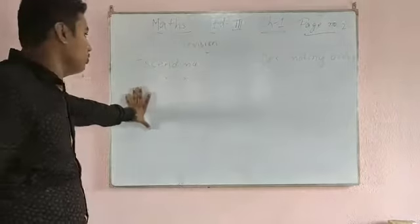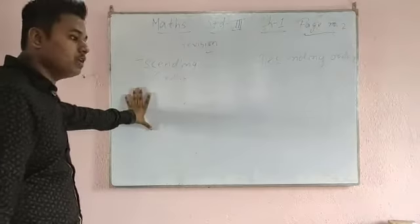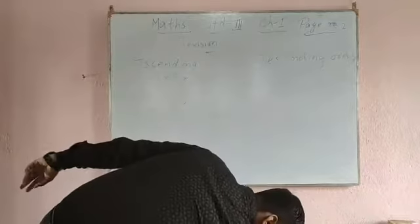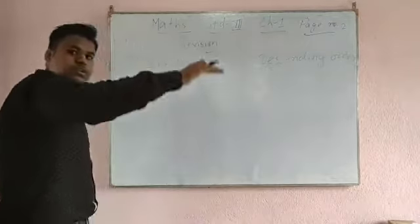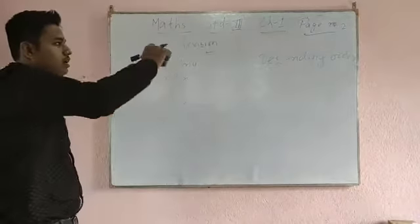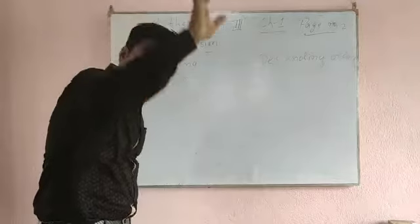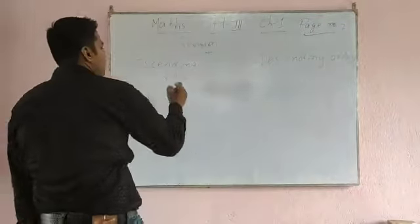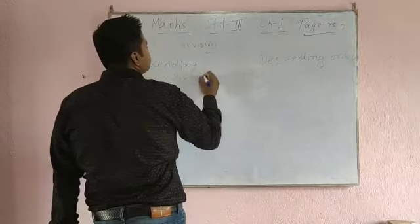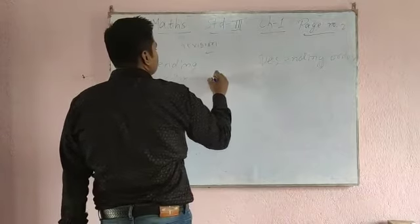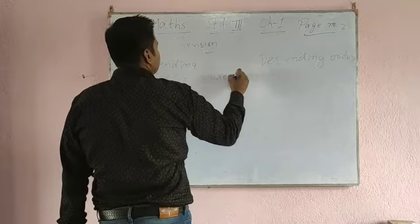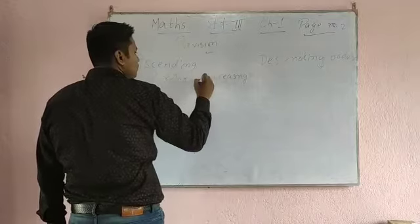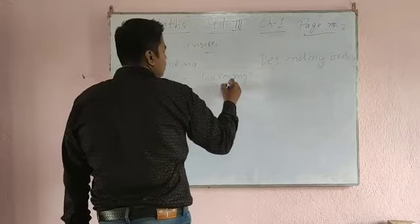Now what do you mean by ascending order? Ascending order means from down to top. You can also read ascending order as increasing order.